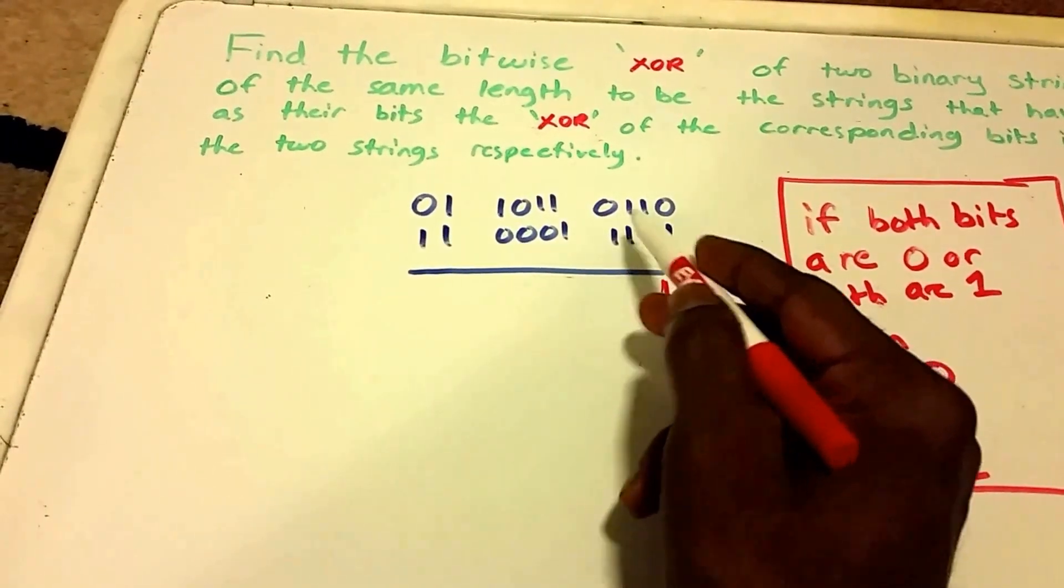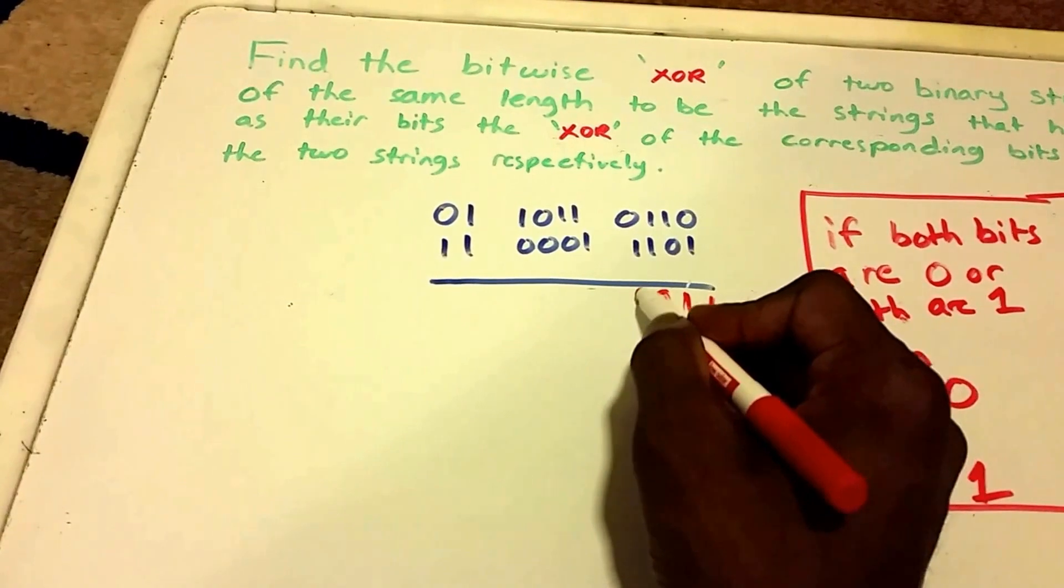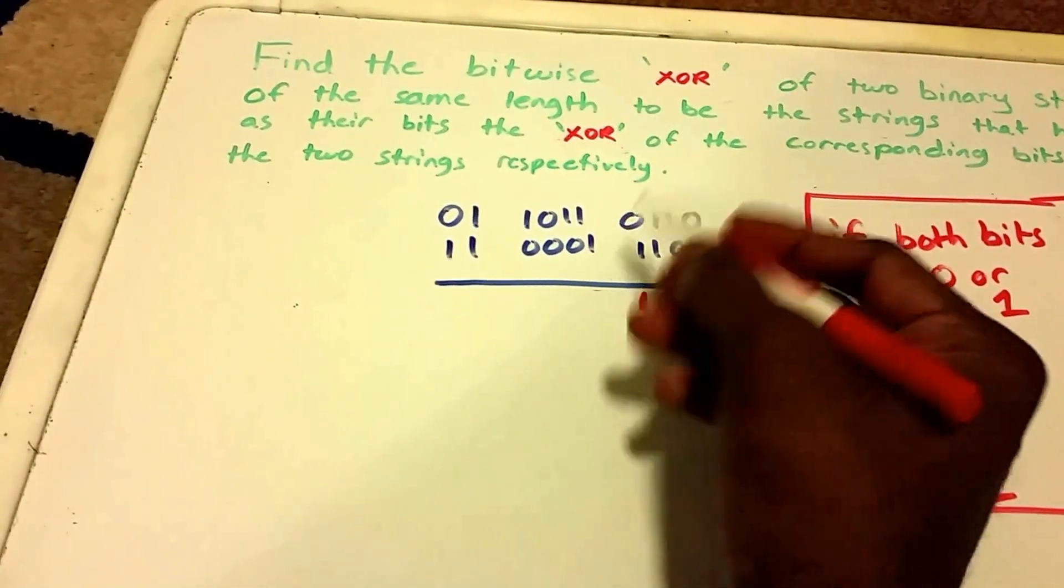Here we have a 1 and a 1, so both bits are 1, so you put 0. You have 0 and 1, so you put 1. Here we have a 1 and a 1, so we put 0.